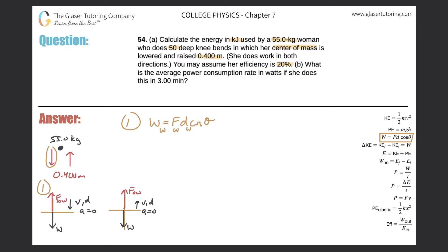In Case 1, the force the woman applies is in the upward direction — it's the force opposing her weight. Since there's zero acceleration, the sum of forces equals zero, so F_opposing_weight minus W equals zero, meaning F_opposing_weight equals W. The force she applies is exactly equal to her weight. So instead of writing F_ow, I can write her weight in the formula.